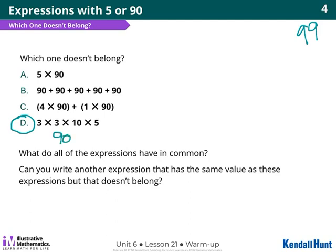Abriela? B doesn't have any multiplication symbols. Okay, Vivian? I say C because it says 1 times 90, which is just 90, and then it says 4 times 90, so technically it's just 4 times 90. So this one has parentheses, so maybe that's the one?